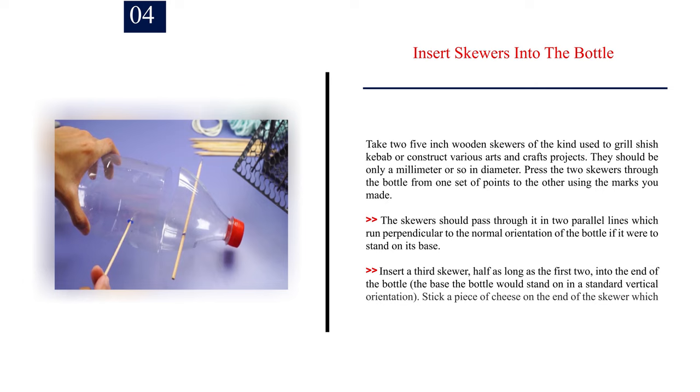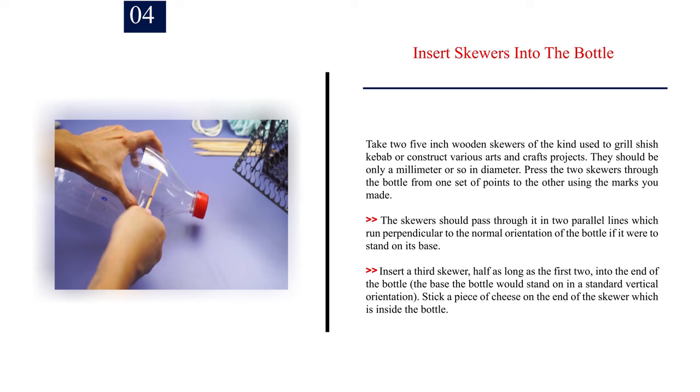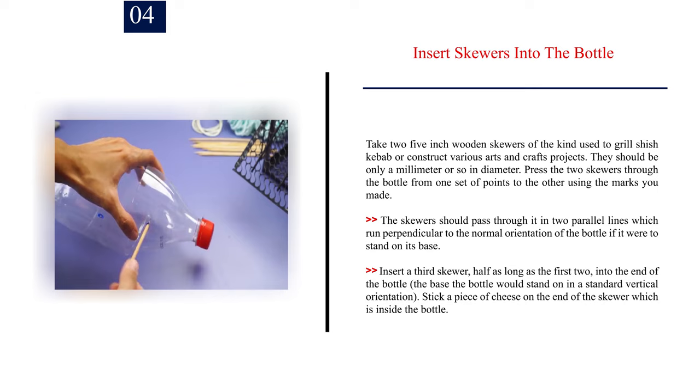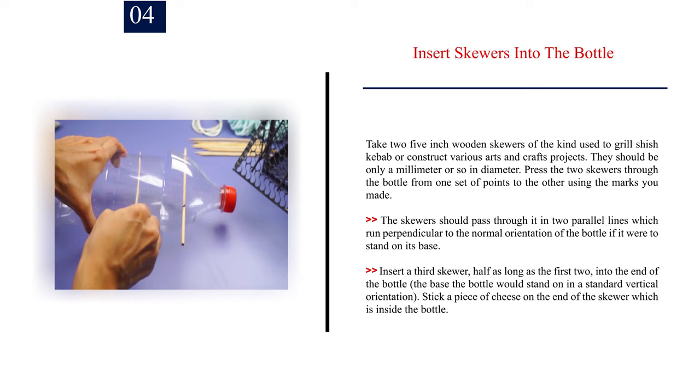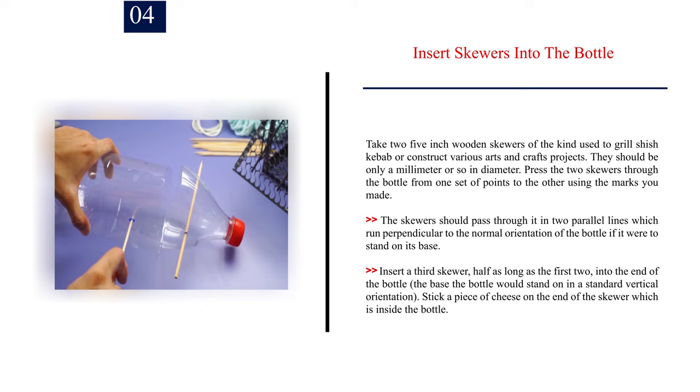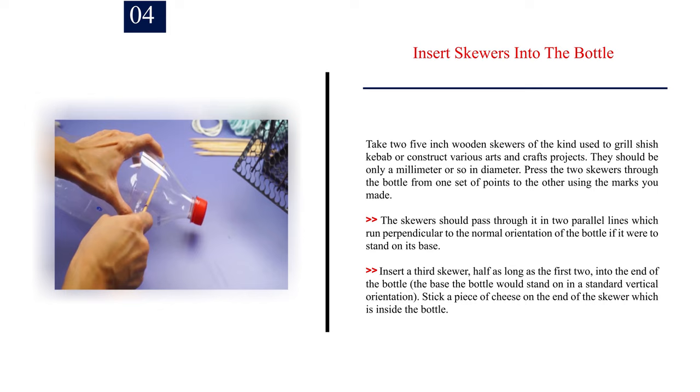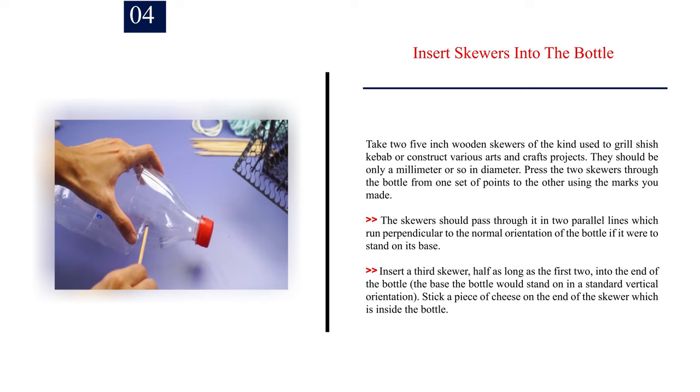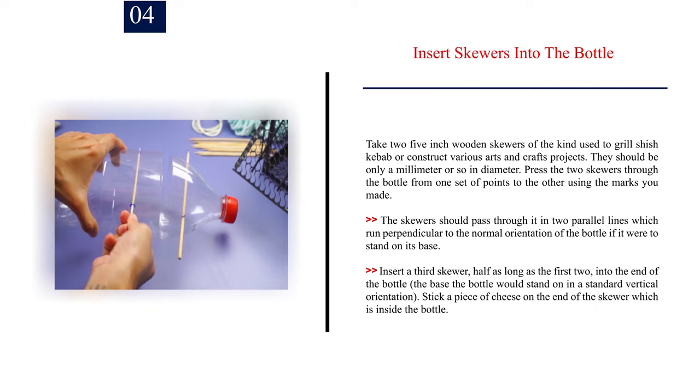Number 4: Insert skewers into the bottle. Take two 5-inch wooden skewers of the kind used to grill shish kebab or construct various arts and crafts projects. They should be only a millimeter or so in diameter. Press the two skewers through the bottle from one set of points to the other using the marks you made. The skewers should pass through it in two parallel lines which run perpendicular to the normal orientation of the bottle if it were to stand on its base. Insert a third skewer, half as long as the first two, into the end of the bottle, the base the bottle would stand on in a standard vertical orientation. Stick a piece of cheese on the end of the skewer which is inside the bottle.